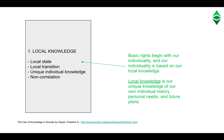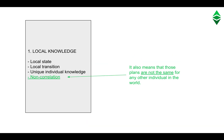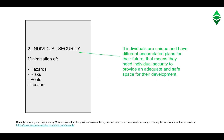How are basic rights encoded in ETC? The eight components of the model. One: local knowledge. Basic rights begin with our individuality, and our individuality is based on our local knowledge. Local knowledge is our unique knowledge of our own individual history, personal needs, and future plans. It also means that those plans are not the same for any other individual in the world.